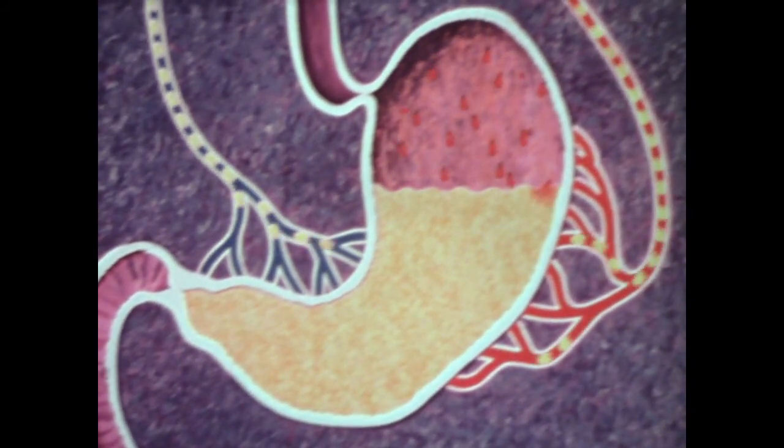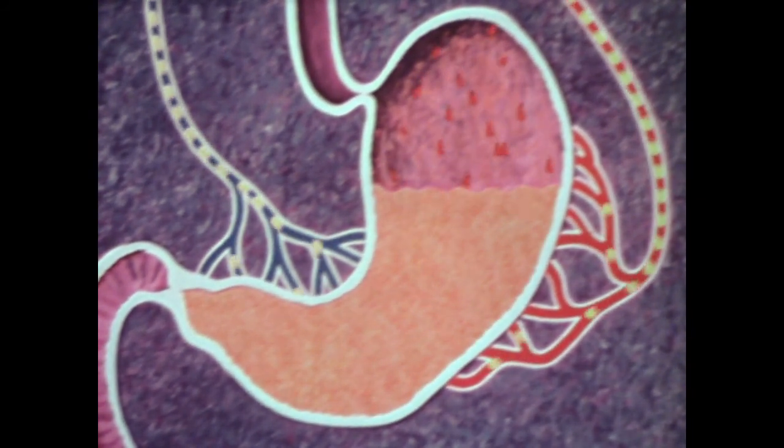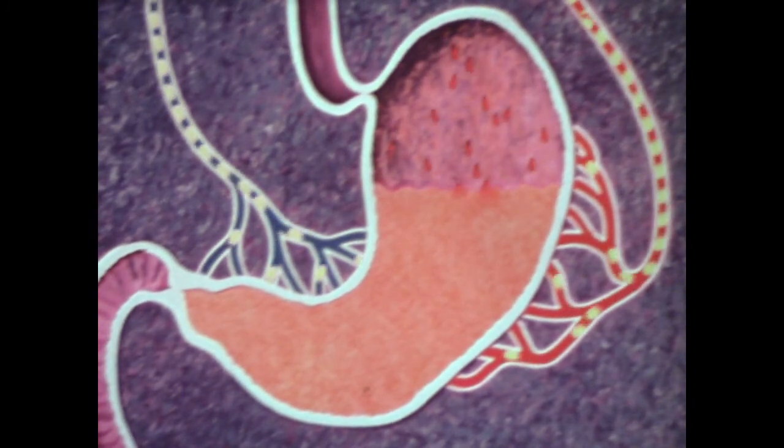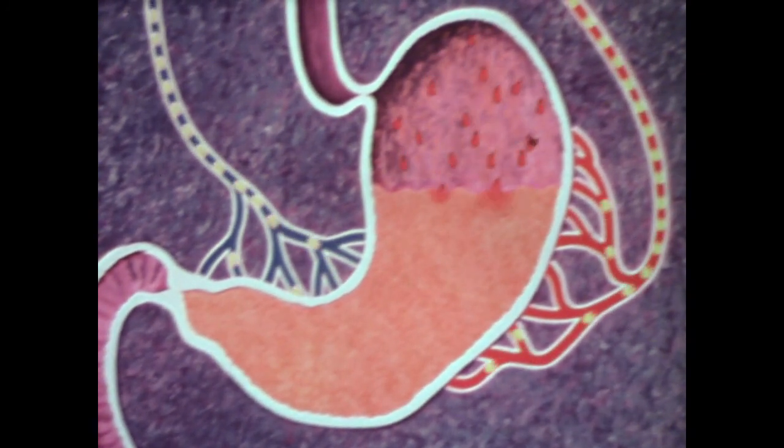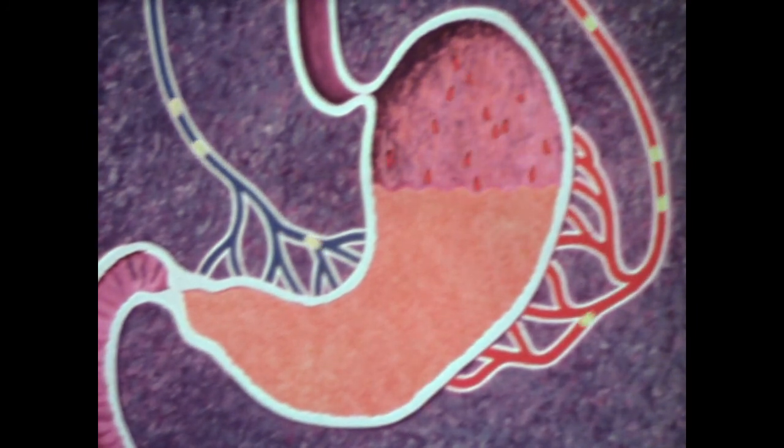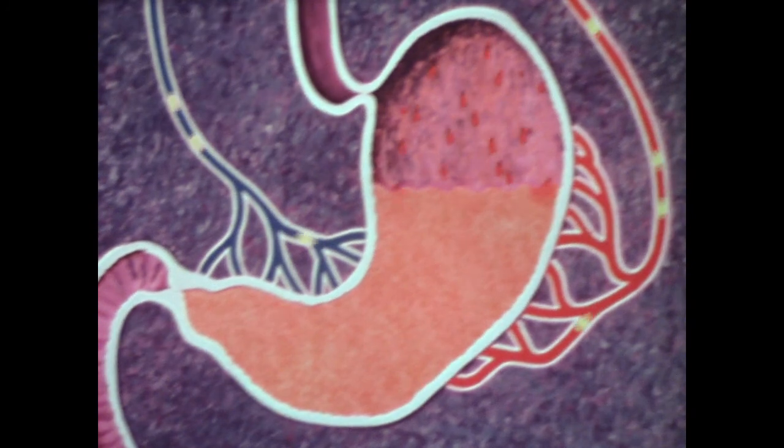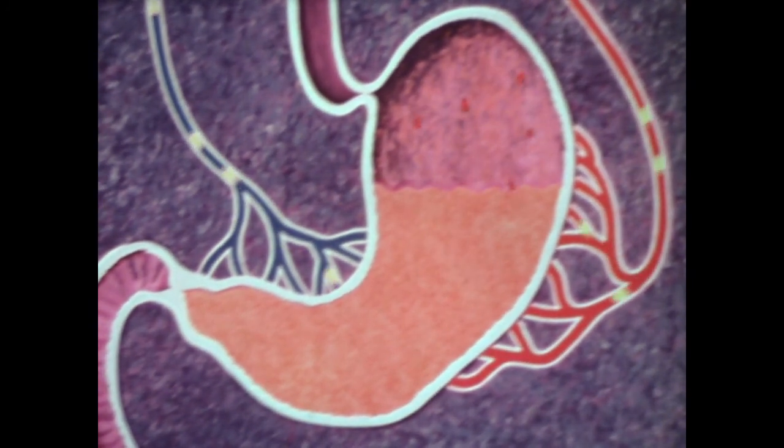But this mechanism is self-regulating. When food has absorbed a sufficient quantity of gastric juice, the acid in food acts on the cells that release gastrin, causing them to reduce their secretion of gastrin, thereby slowing down the flow of gastric juice into the stomach.